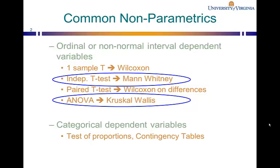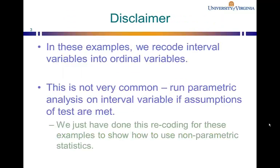So the nonparametric tests we will look at today compare sample medians, meaning their null hypothesis tests whether the medians of the samples are the same. In the two examples we'll consider today, we will recode interval variables into ordinal variables. This is generally not done, as you would generally run parametric analysis on interval variables if all assumptions of the t-test or ANOVA were met, but we're doing this to illustrate how to use nonparametric statistics in Minitab.